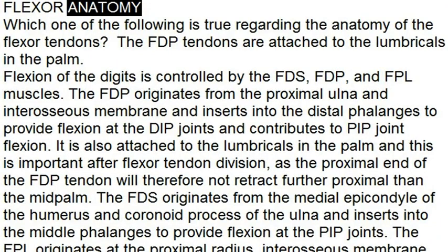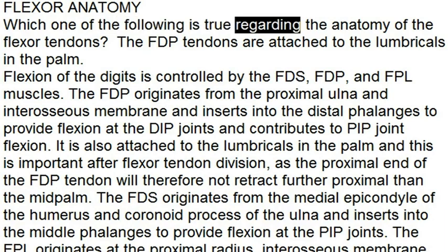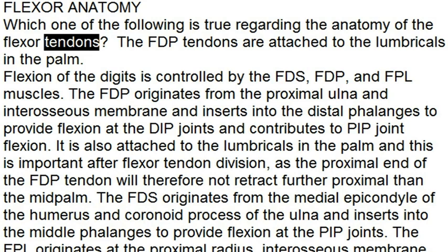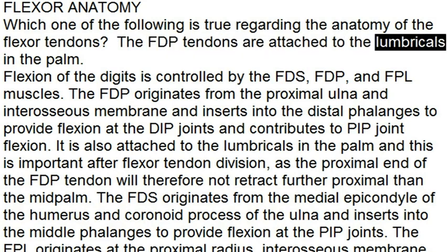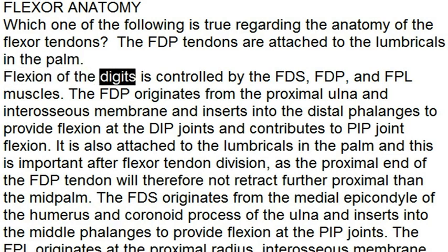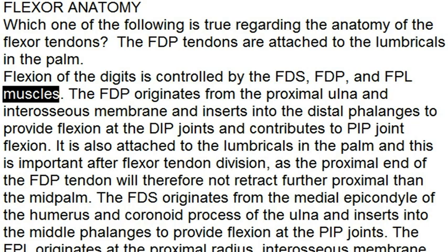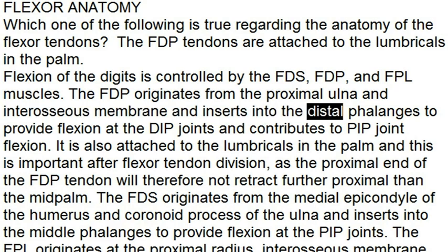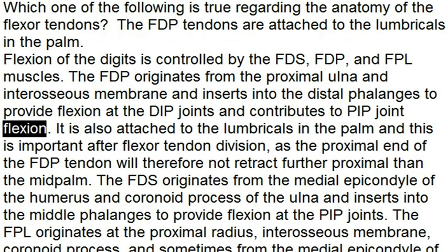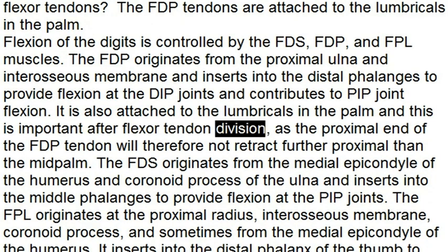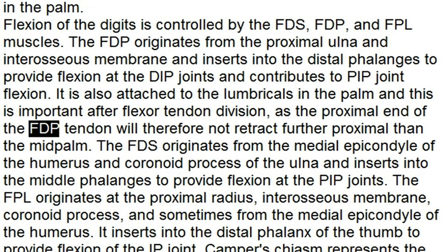Flexor anatomy: which one of the following is true regarding the anatomy of the flexor tendons? The FDP tendons are attached to the lumbricals in the palm. Flexion of the digits is controlled by the FDS, FDP, and FPL muscles. The FDP originates from the proximal ulna and interosseous membrane and inserts into the distal phalanges to provide flexion at the DIP joints and contributes to PIP joint flexion. It is also attached to the lumbricals in the palm, and this is important after flexor tendon division, as the proximal end of the FDP tendon will not retract further proximal than the mid palm.